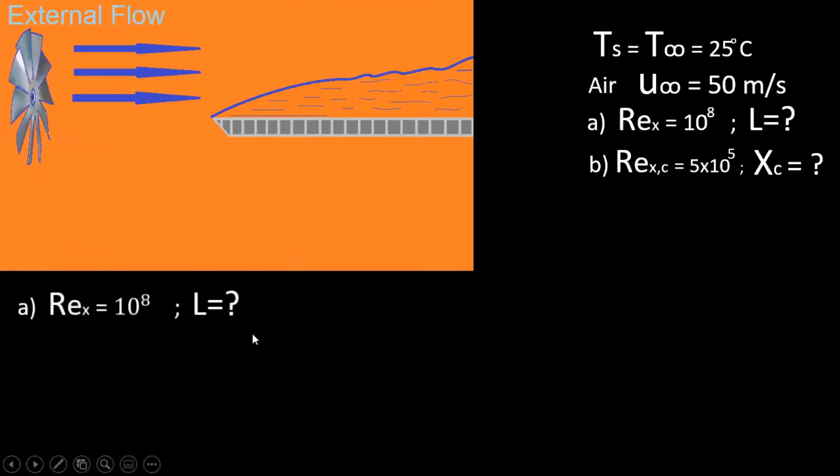Now let's take a look at part A. We know our Reynolds number 10 to the 8, we need to find the length that corresponds to this. Now if we look at our plate setup, what kind of flow do we have? We have external or internal flow.